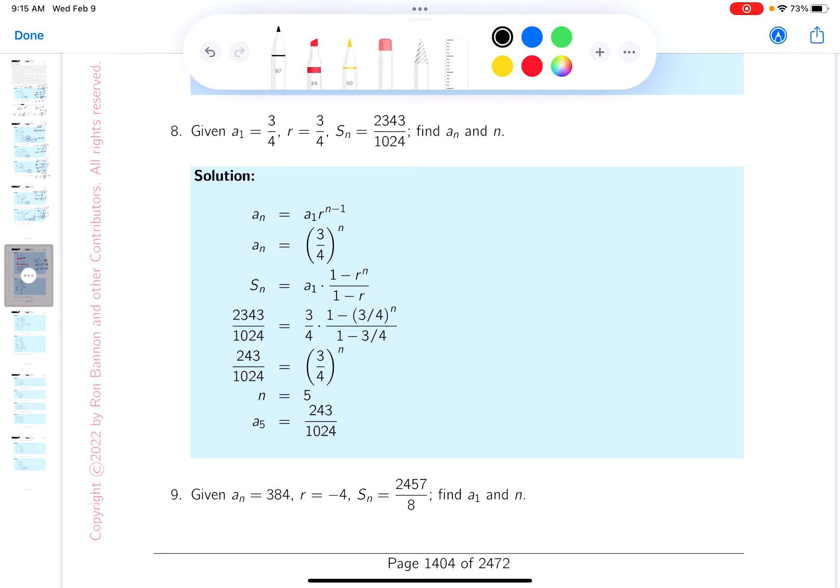Again, we're given things, we're asked for things. You're given that A1 is 3 quarters, you're given the common ratio is 3 quarters, this is geometric, you're given the nth partial sum, and they're asking to find An and n.